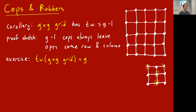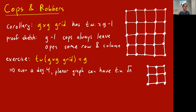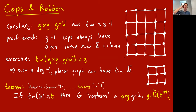Interestingly, some people would judge a grid graph to be a pretty simple graph — it's planar and has maximum degree four — yet it can have arbitrarily large tree width. A G-by-G grid is a degree-four planar graph, and its tree width is G, which is the square root of the number of vertices. Relatively simple graphs can still have quite large tree width.